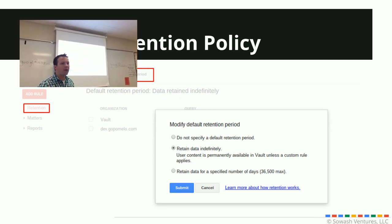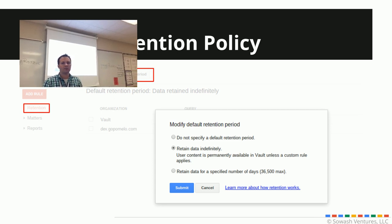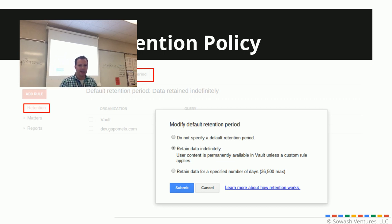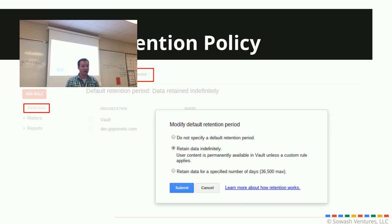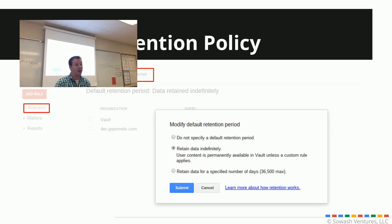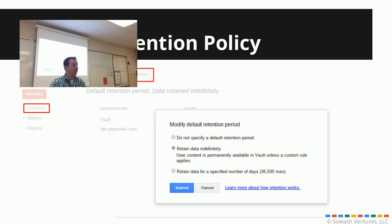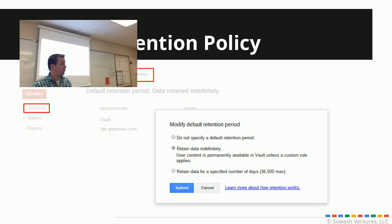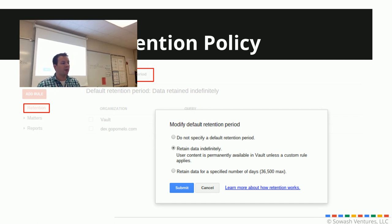Any questions about retention period? One attendee noted they went indefinite because if you set it for seven years and a superintendent had something saved, after seven years it could be deleted from their inbox. I believe that is correct — it purges that data after that period from the moment it was received. You've got to talk to your admins and lawyers to decide the best option. For today, I would go ahead and put it to indefinitely for the moment, have those discussions, and then switch it whenever you make a choice.